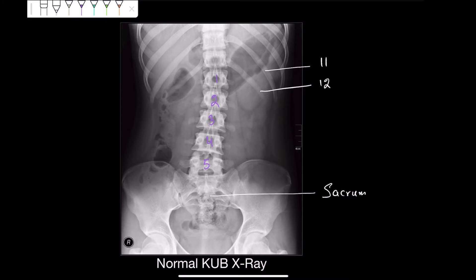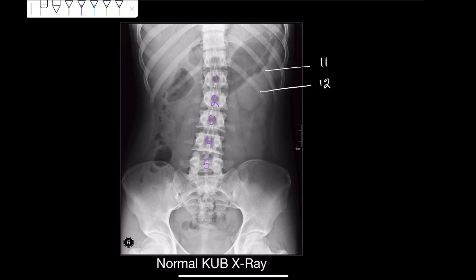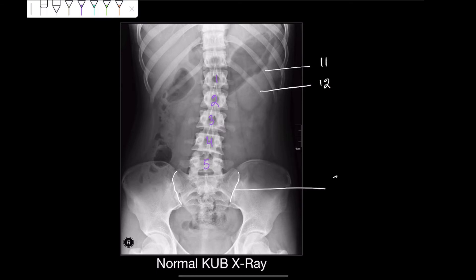We can see the bony pelvis — these are the coxal bones or the hip bones. These coxal or hip bones are made up of three bones, and right now we are looking at the ileum. We need to identify where is the junction between the sacrum and the coxal bone, which is indicated by this white line and is given the name sacroiliac joint.